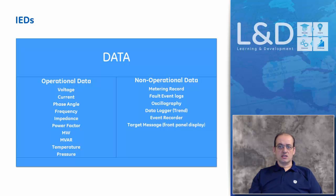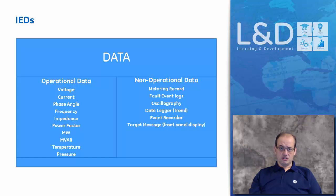The difference between operational and non-operational data is that operational data is information the operator will have to take immediate action on — day-to-day data. Non-operational data is data required to be collected for a study, for trending, for regulation, or any requirements that require logging data and performing analysis. These are the two main categories of data in a device.